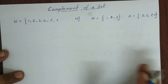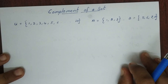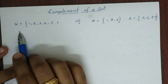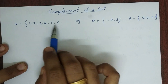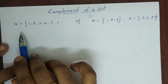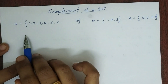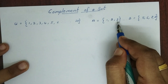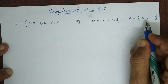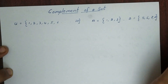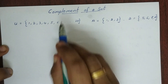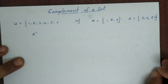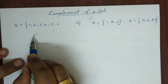The next topic is complement of a set. What is complement? First, the universal set U is equal to 1 up to 10. Then A is equal to {1, 2, 3} and B is equal to {5, 6, 7, 8}. We represent A complement.